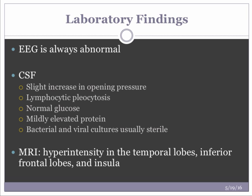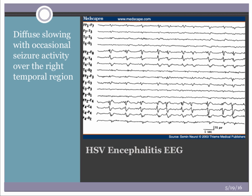CSF findings in encephalitis: slight increase in opening pressure, lymphocytic pleocytosis, normal glucose, mildly elevated protein, and bacterial and viral cultures are generally sterile. MRI will show hyperintensity in the temporal lobes, inferior frontal lobes, and insula. An EEG from a patient with HSV encephalitis shows diffuse slowing of background activity with occasional activity over the right temporal region.